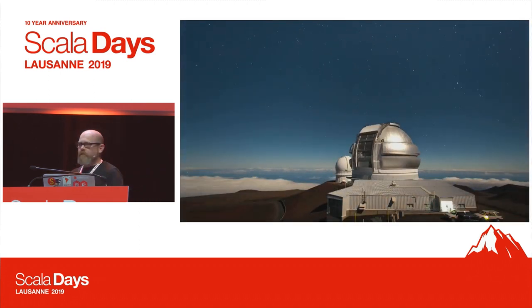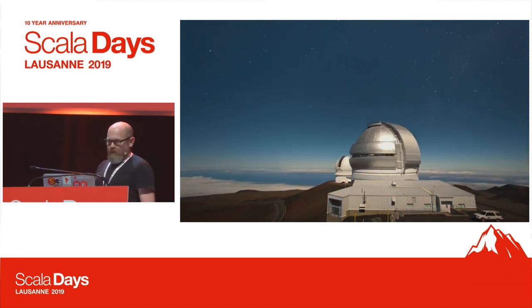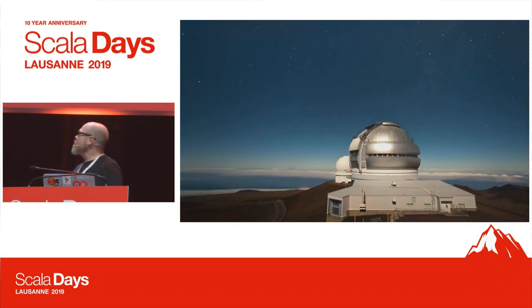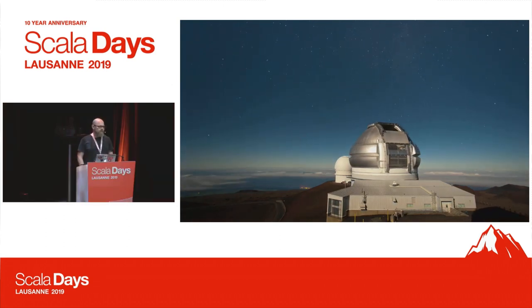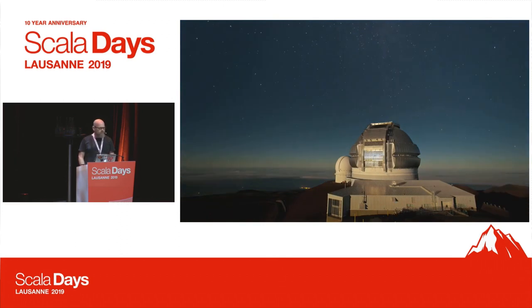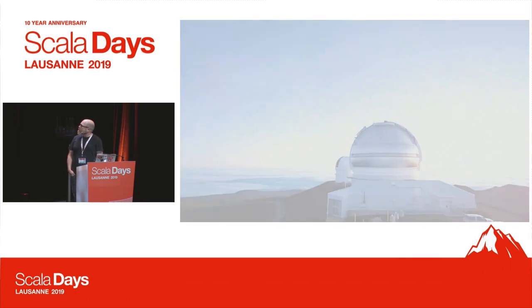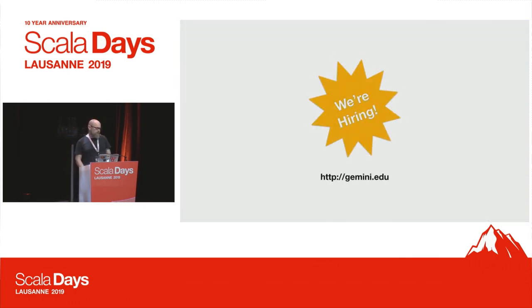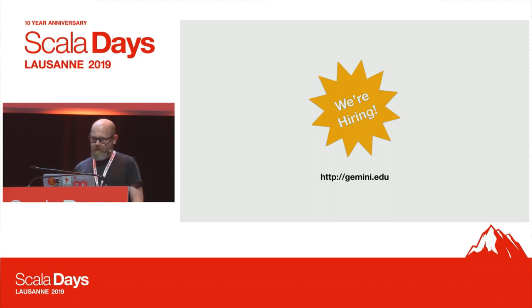This is where I work — the Gemini Observatory. This was taken at night, but the moon is up, so it's kind of bright. We have two 8.5-meter telescopes, one in Chile and one in Hawaii. They are amazing machines, and my job is to write software that helps scientists use them to look up and learn new things. And we are hiring — if science programming and functional programming interest you, let me know, because I think it's really interesting work we do.